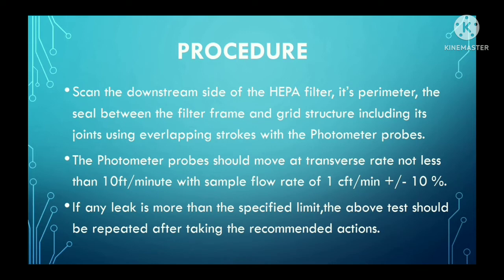Step 4: Scan the downstream side of the HEPA filter, the seal between the filter frame and grid structure including its joints, using overlapping strokes with the photometer probe. Step 5: The photometer probe should move at a traverse rate of not more than 10 feet per minute with a sample flow rate of 1 cubic feet per minute plus or minus 10 percent.